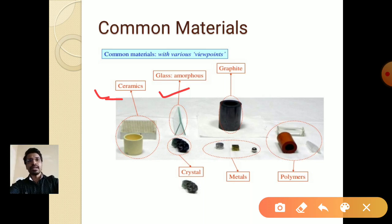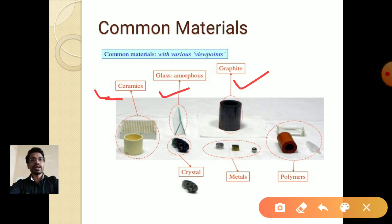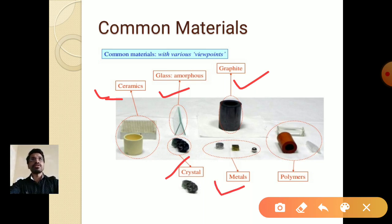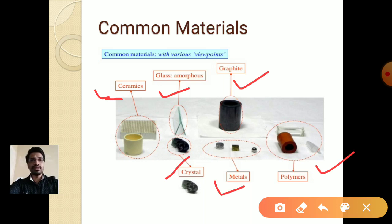Graphite is made up of carbon and is black in color. You might have seen graphite electrodes in batteries, and pencils are also made of graphite. Single crystals are used in turbine blades. Different metals are present like aluminum, copper, and steel. Polymers are used in plastics — plastic bags, polyvinyl chloride — and these are some common materials used in day to day life.